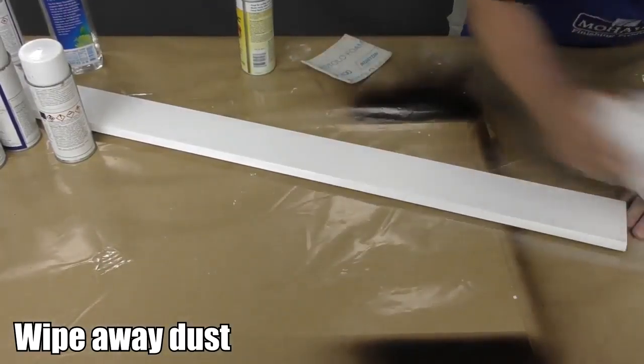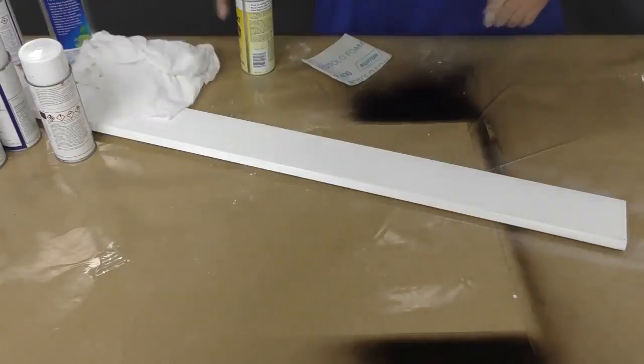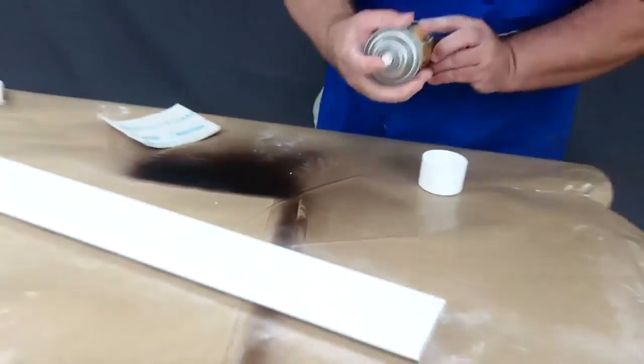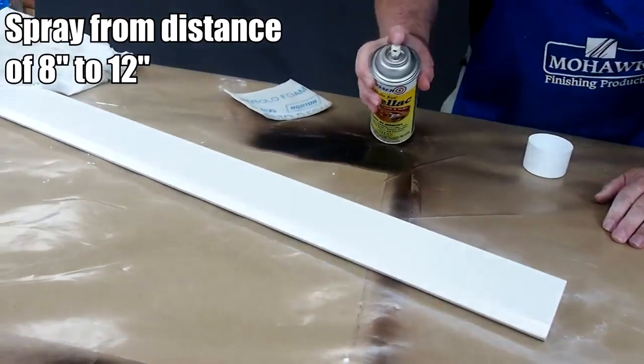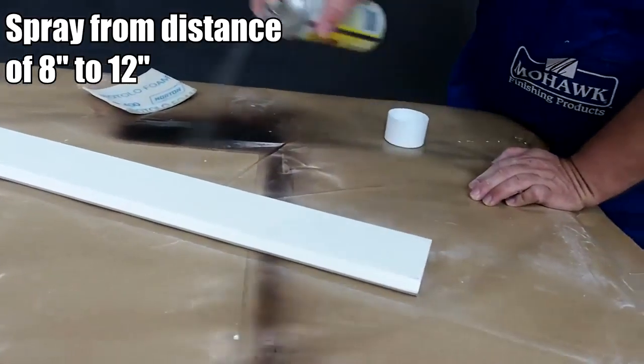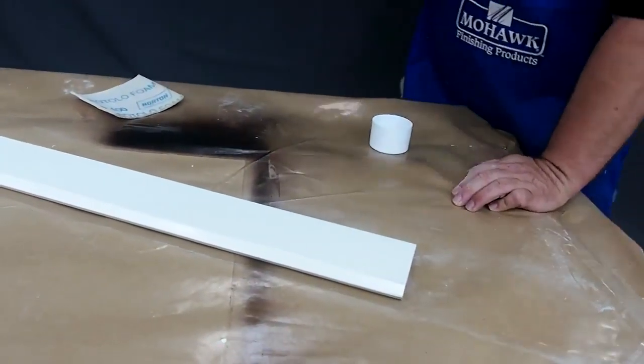The first product you will apply is the shellac. This serves as an adhesion promoter. Shake the can vigorously, turn it upside down and spray it. This will make sure that the nozzle is clear. Then apply the shellac in smooth even strokes from a distance of 8 to 12 inches.